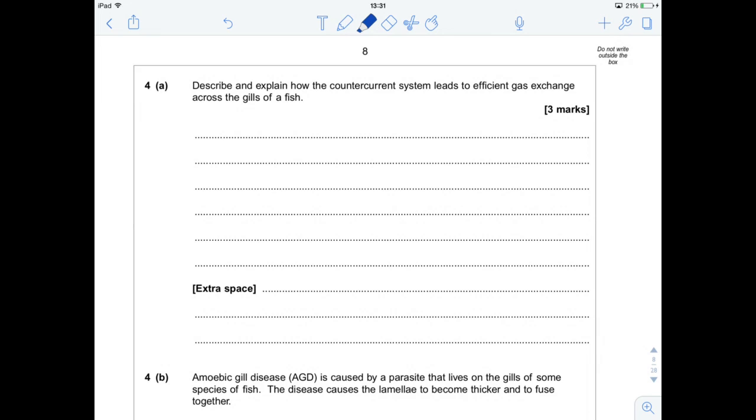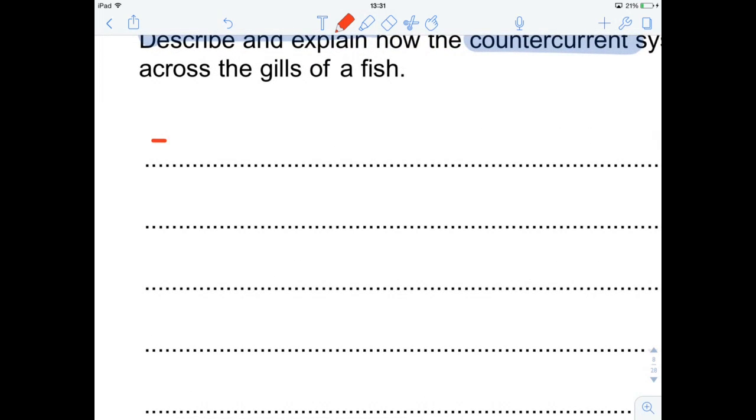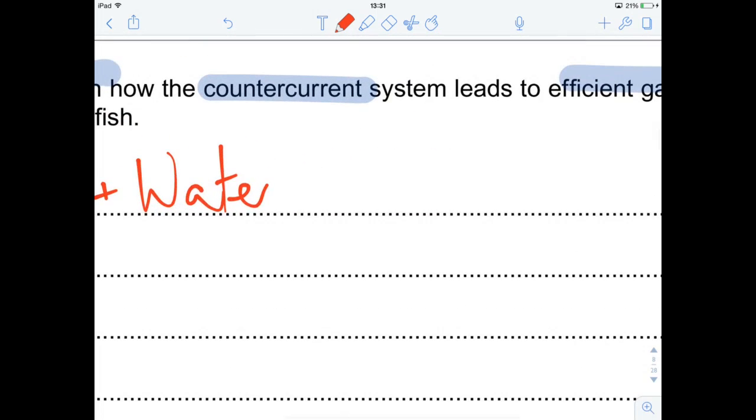And then we're going to dive in to describe and explain how the counter current system leads to efficient gas exchange across the gills of a fish. So it's only asking about counter currents. The first thing we should be saying is that blood and water are travelling in opposite directions across the gills.